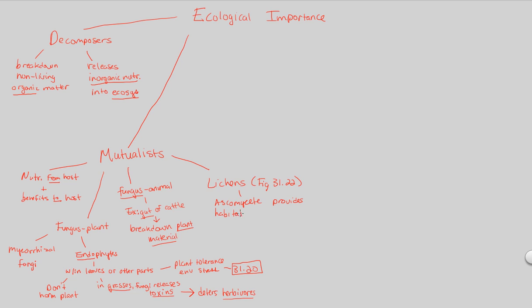The ascomycete provides a habitat. So this is weird that the fungi now is providing a habitat, not the other animal. In this situation, it seems like the animal is providing the habitat, the leaf or grass is providing the habitat. Here, the ascomycete provides habitat for a photosynthetic microorganism, so something much smaller than the fungus itself.